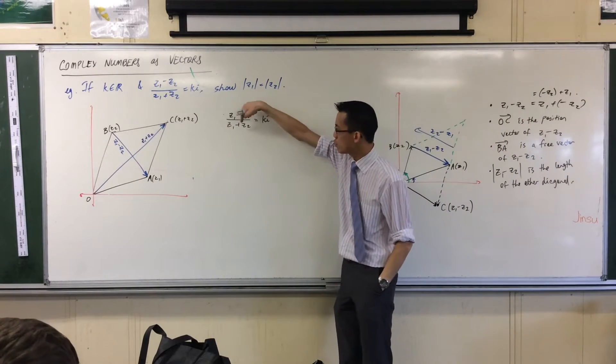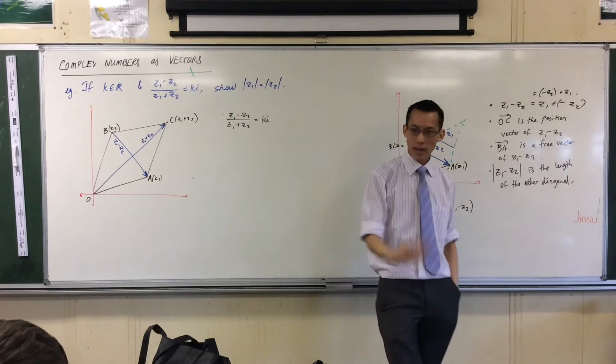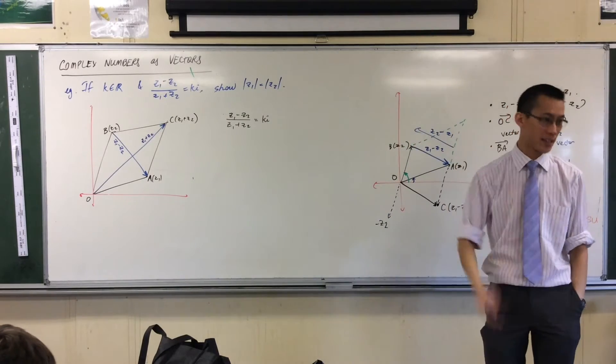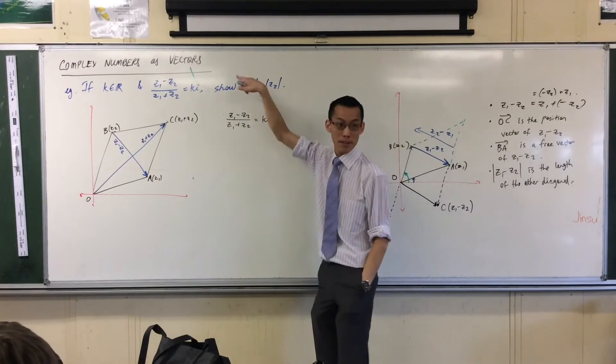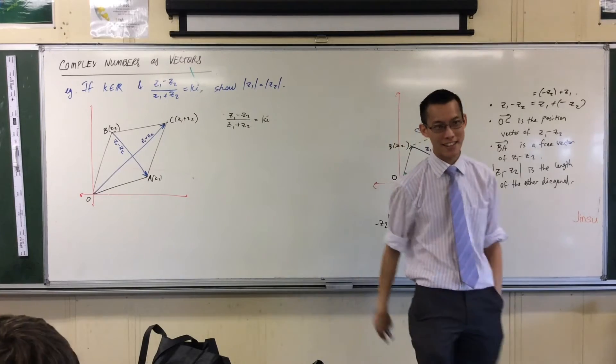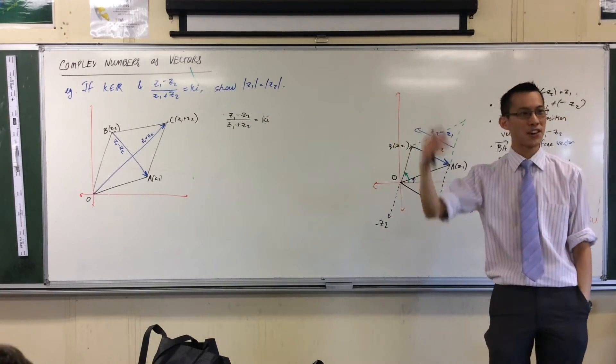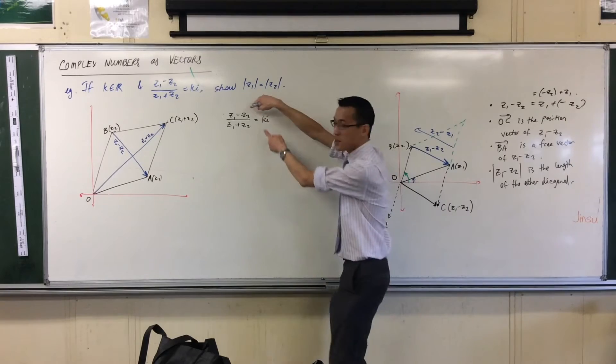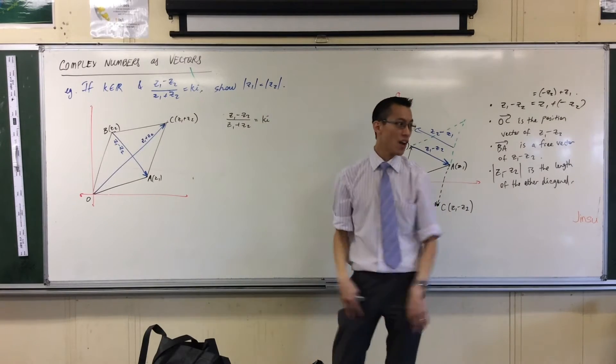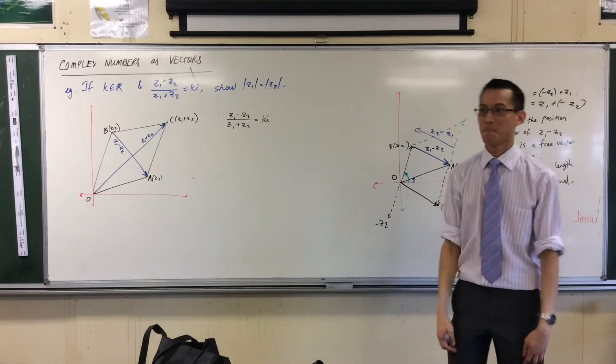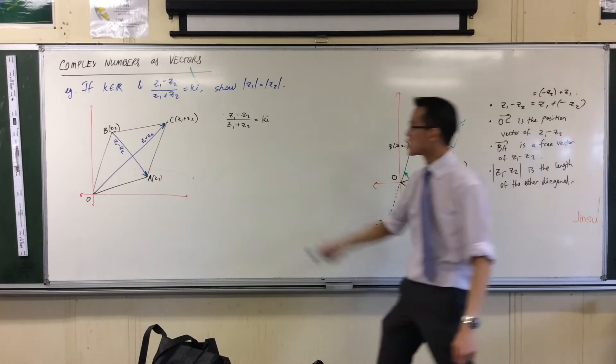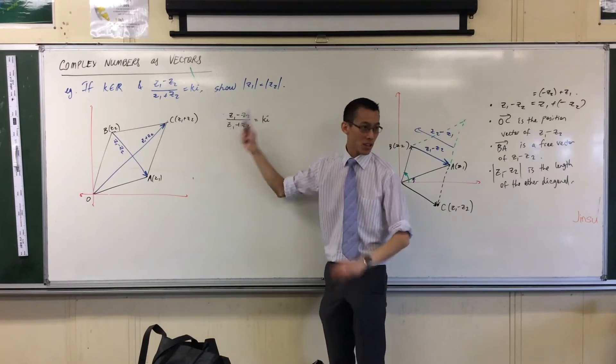When you add two complex numbers, what kind of number do you get out the other end? Another complex number. If you subtract two complex numbers, what kind of number do you get? Another complex number. And when you take those two and divide, the quotient is still a complex number. So this awful mess is a complex number.